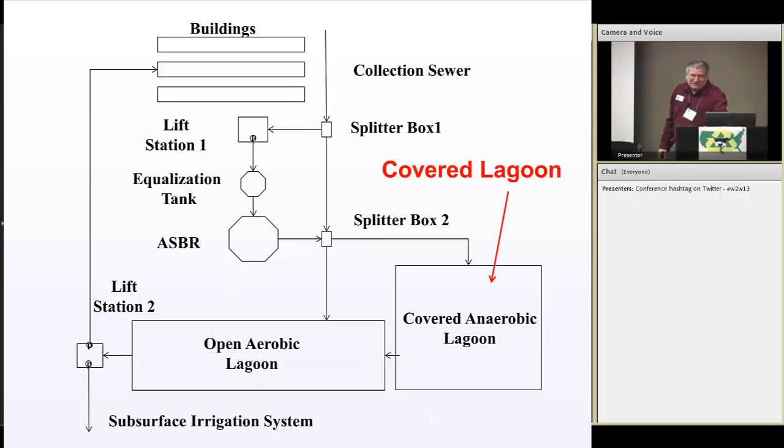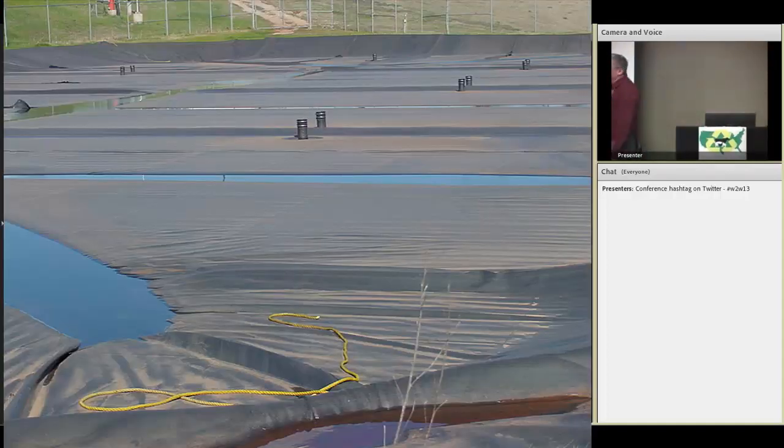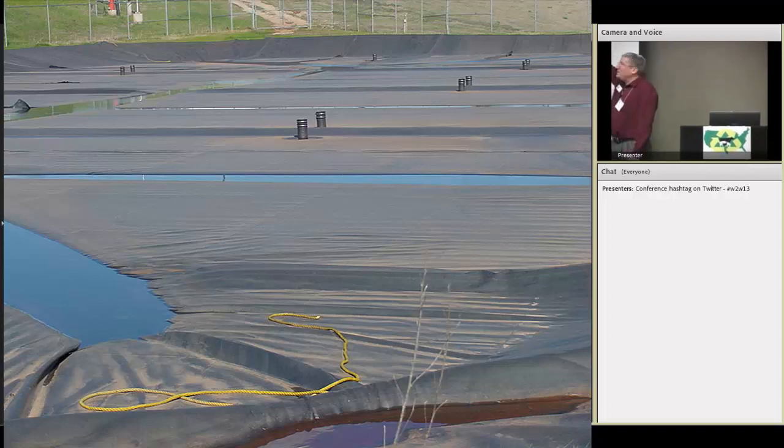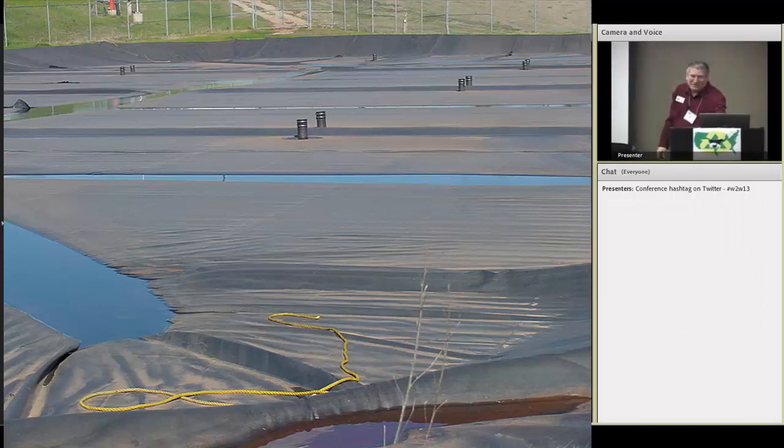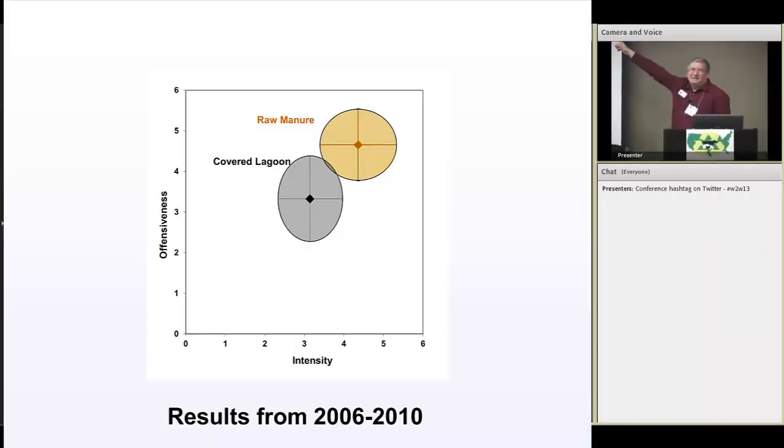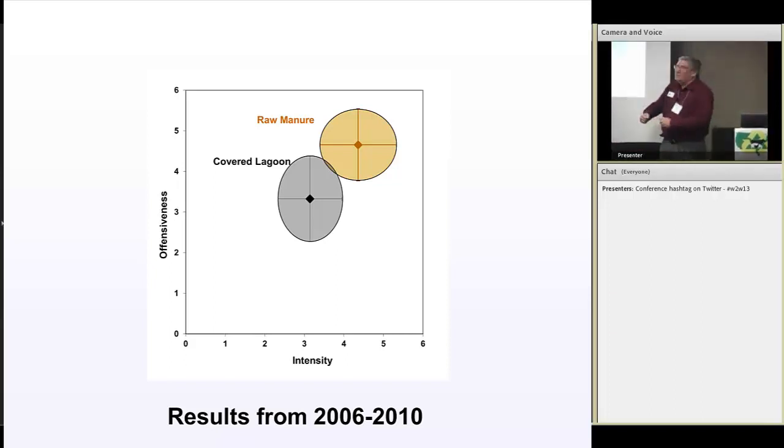The next thing they smelled, back when I was brave enough, I'd walk out onto our covered lagoon, and we have some sample ports. I would dip the effluent off the top, and they would smell that straight. And you can see that there's no overlap. In other words, because we went through that anaerobic treatment, it's less intense and it's less offensive. Okay, you all buy that? Let's start land applying covered lagoon effluent. It's going to reduce the intensity by one log unit. What about the offensive end? What did you just learn? That's probably wrong.